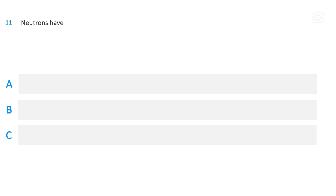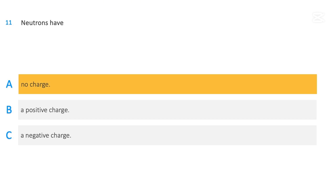Neutrons have: no charge; a positive charge; or a negative charge. The correct answer is no charge.